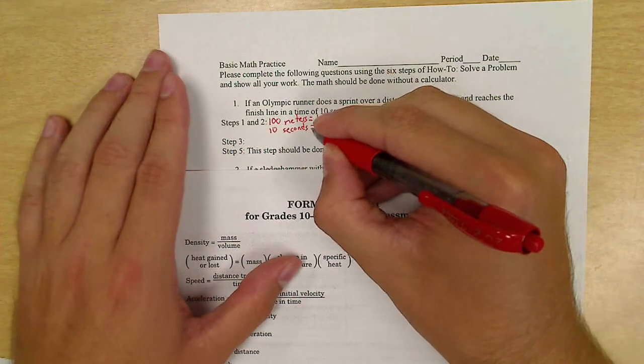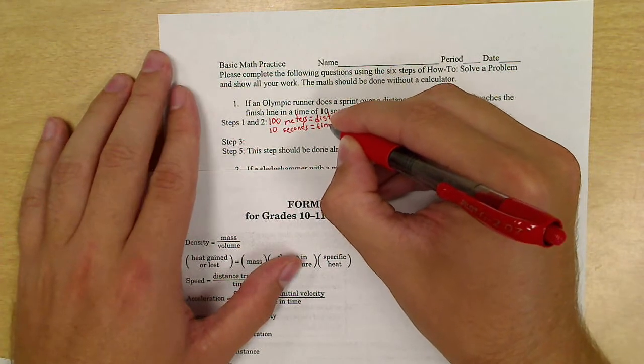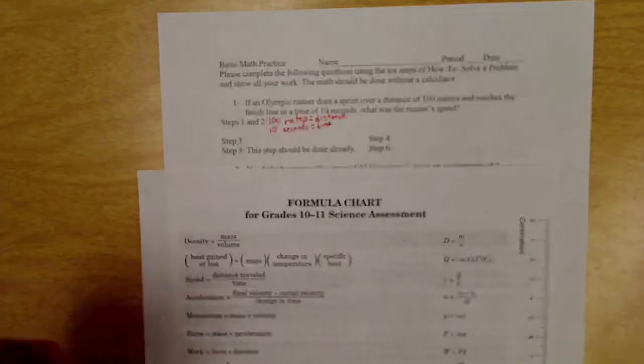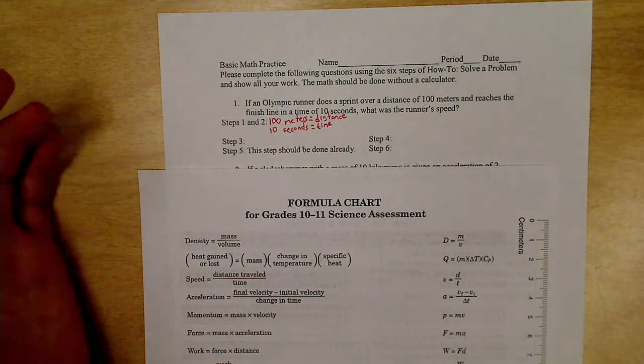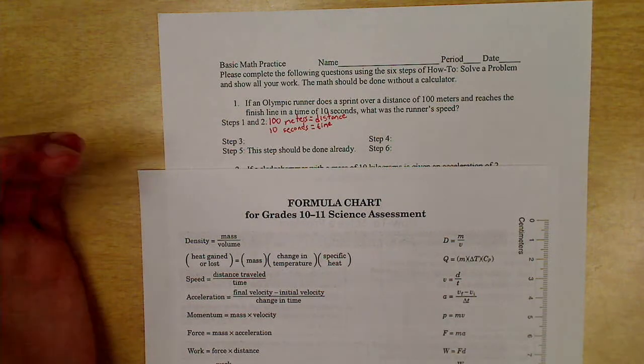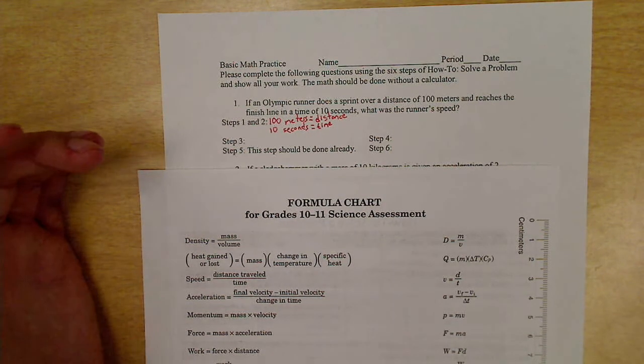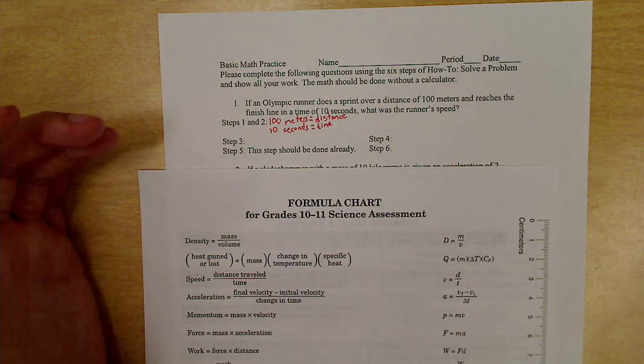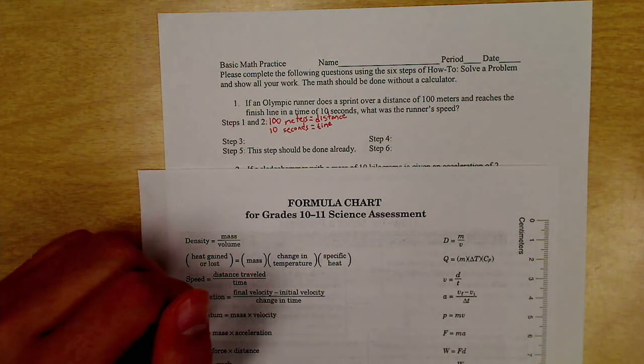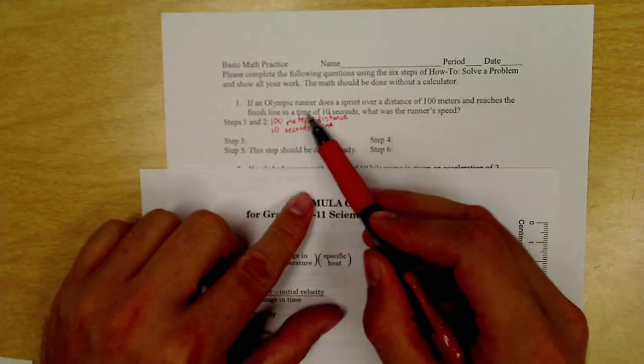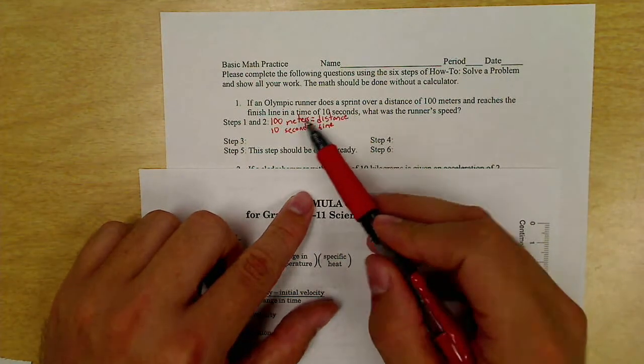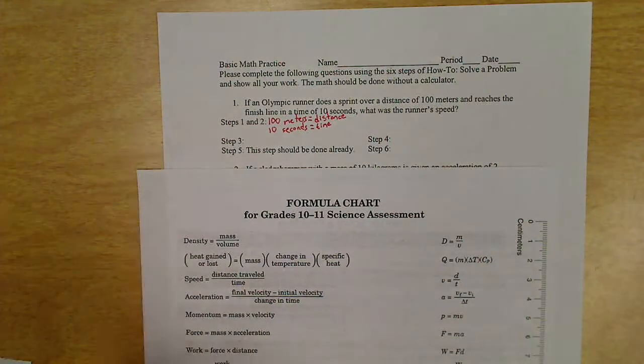Now, we look at 10 seconds. I think most of us recognize that seconds is the units that measure time. Now, whenever I said the units will never lie to you, this is a good example. We can't use seconds to measure anything but time. We can't say how many seconds tall we are. We can't say how many seconds fast we're going. We can only say time in seconds. So I know that 10 seconds is a time, but it also says a time of 10 seconds. It says it right there in the problem. So that's step one and two. We've identified it.